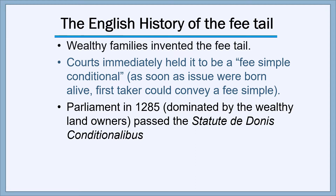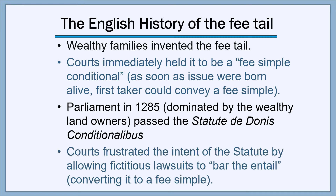The courts, however, were not very deterred by the Statute De Donis Conditionalibus. Within a few years, the courts began to frustrate the intent of the statute by allowing fictitious lawsuits to be created that would, as they put it, 'bar the entail.' By barring the entail, what they meant was that an owner who held a fee tail could come into court using one of these fictitious lawsuits and convert it into a fee simple estate. So ultimately in England, the courts won this contest and the fee tail was defeated, permitting anybody who owned one to convert it into a fee simple estate.